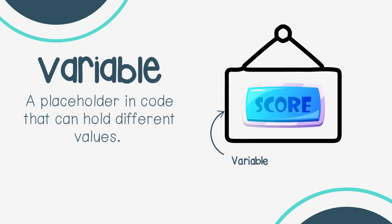Variable: a placeholder in code that can hold different values. For example, if you have a variable called 'score,' it can hold different numbers as you play a game. At the beginning, score might be zero, but each time you win points, the number in the score box changes. Variables help programs keep track of important information that can change while the program runs.